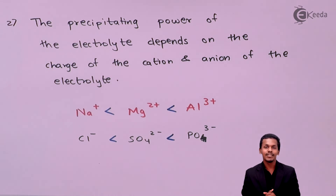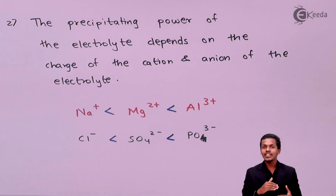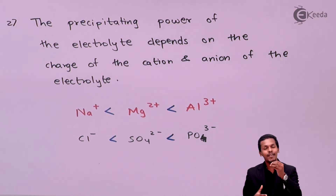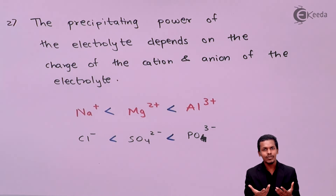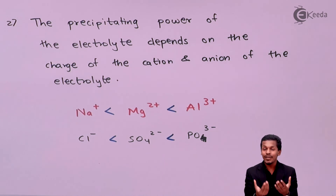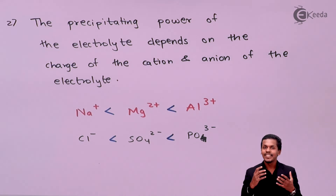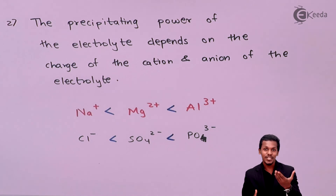In contrast, for lyophobic colloids, the dispersed phase and dispersed medium do not have strong attraction toward each other. Even a small amount of electrolyte is able to cover the colloidal particle, neutralize it, and associate multiple particles onto it, causing coagulation. That is how precipitation can be achieved for lyophobic sols with a smaller amount of electrolyte.